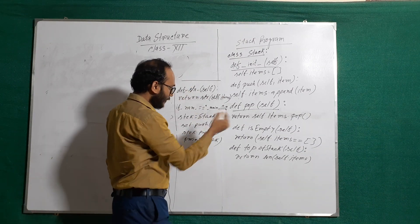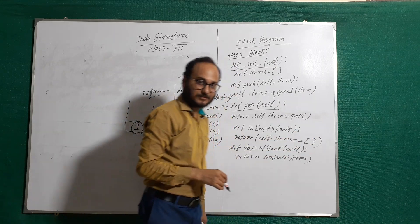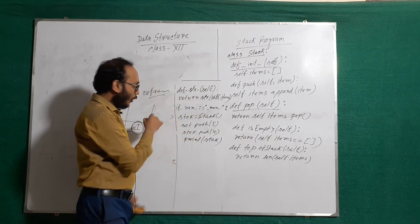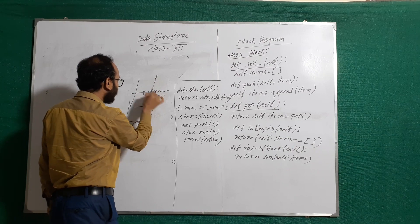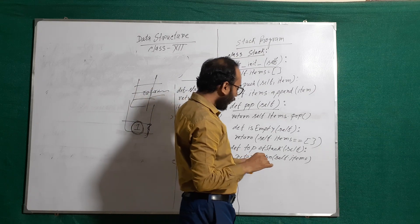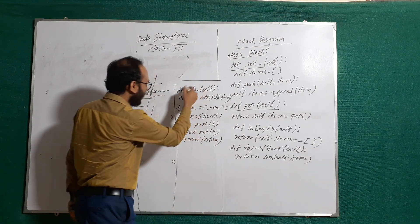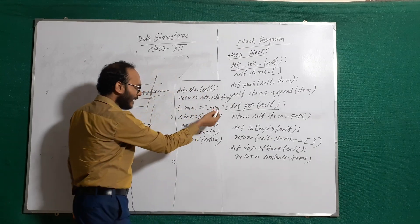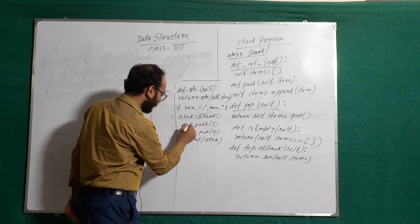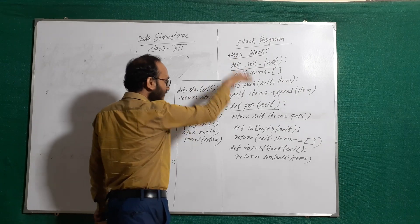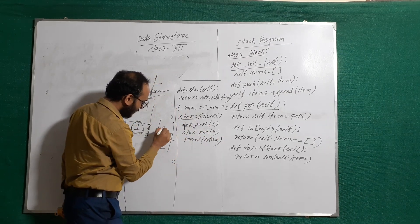If the stack is empty, we return self.item as a blank list. We also define a top-of-stack function that returns len(self.item) to calculate how many elements are in the stack. We also define a string stack function. In the main block, we create a stack object stck, and push values like 5 and 10.